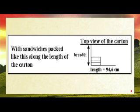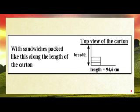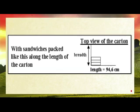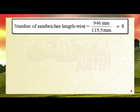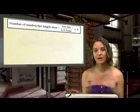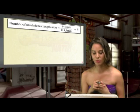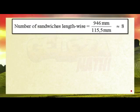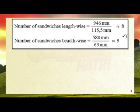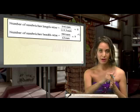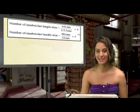Now we're working on the size of our carton. The sandwich is packed like this along the length of the carton. The length of the carton is 94.6 centimetres. We're trying to work out how many sandwiches we can fit along the length. So 946 millimetres divided by the length of the sandwich box — 115.5 millimetres — gives us 8. The breadth of the carton is 580 millimetres and the breadth of the sandwich box is 63 millimetres, which gives us 9.